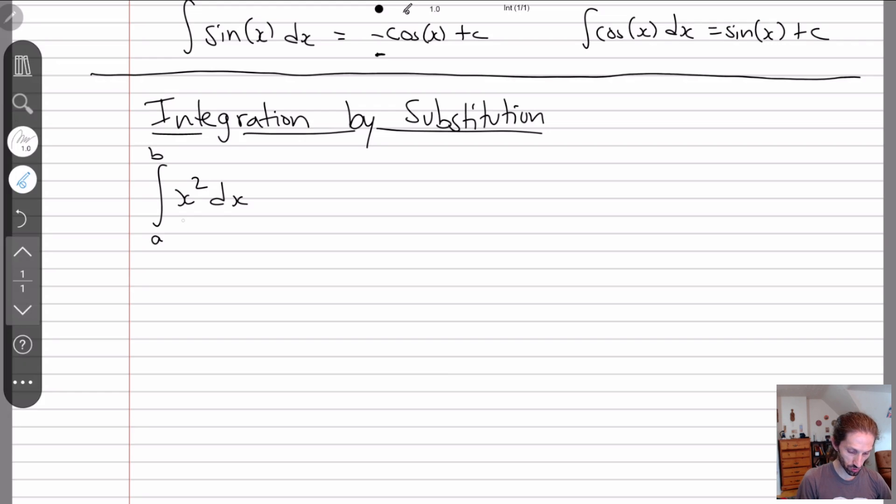We're going to look at first a kind of bad example, something where integration by substitution doesn't help, but it helps us see what's happening. So if I have some integral from a to b, x squared dx, basically, what we're going to want to do is we're going to try to convert everything from x's to some new variable. So usually, what we'll do is we'll make x squared be equal to y, or u, I think most people use u, u substitutions.